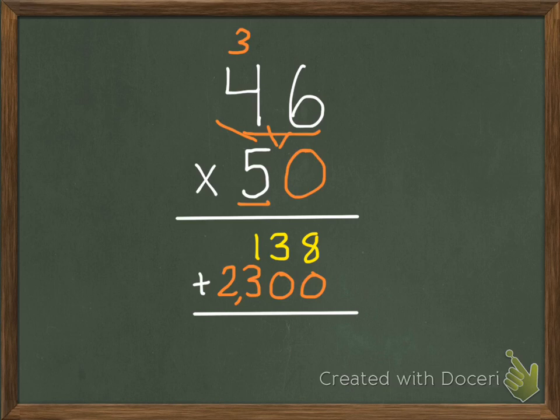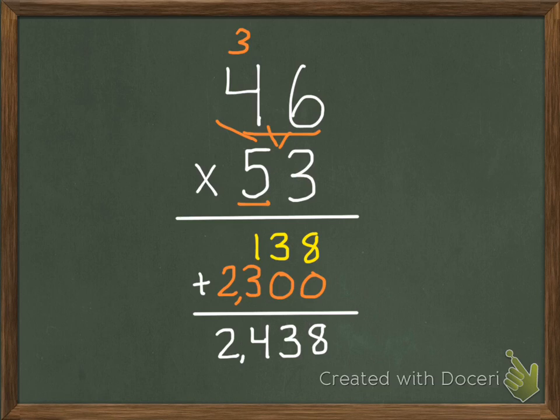So 8 plus 0 is 8. 3 plus 0 is 3. 1 plus 3 is 4. And then 2. So for our problem, 46 times 53, our answer is 2,438.